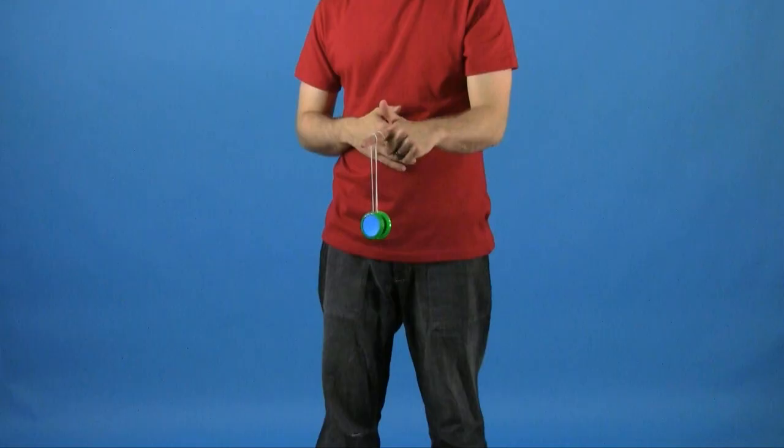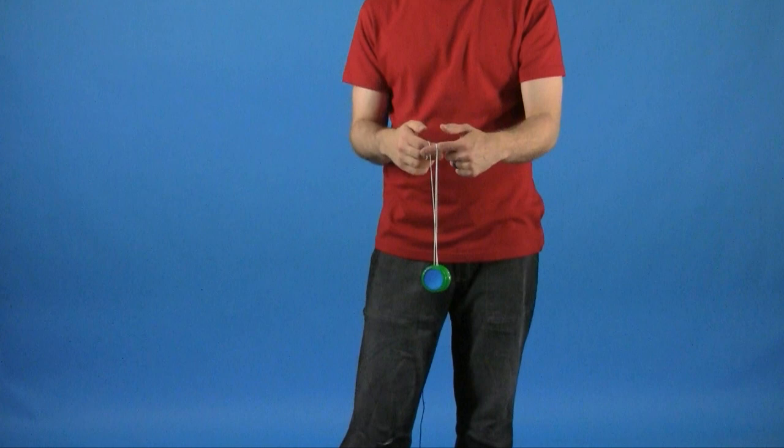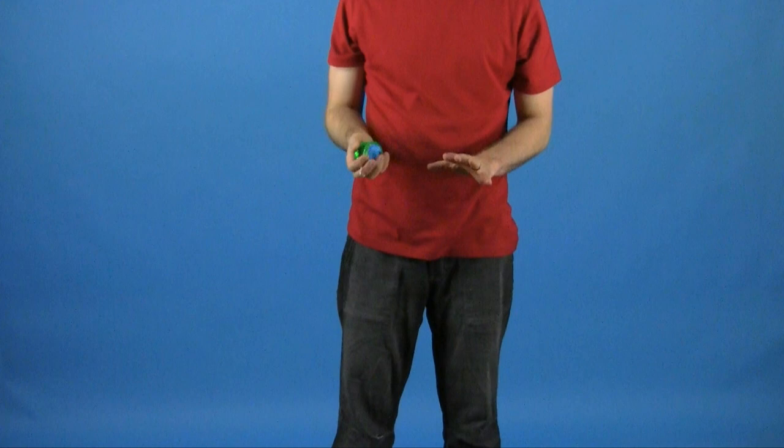Once you have got it here, to dismount all you are going to do is flip the yoyo off to the left and you can just take it right off the string if you want and then do your bind.